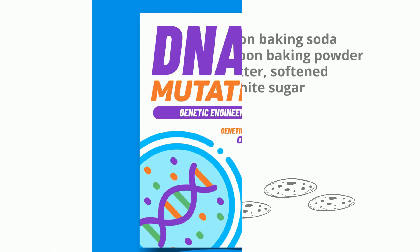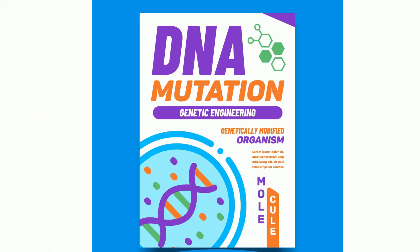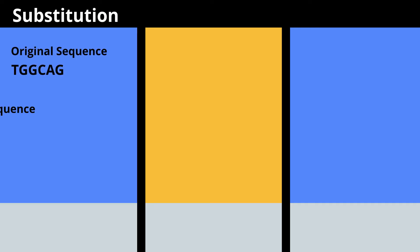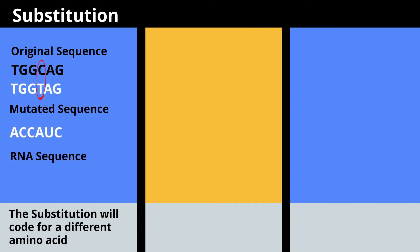Let's take a look at a couple of examples. One of the most basic types of mutations is a substitution. Here's the original sequence, and here's the mutation. As a result, the RNA will be slightly different, and the protein will also vary slightly.